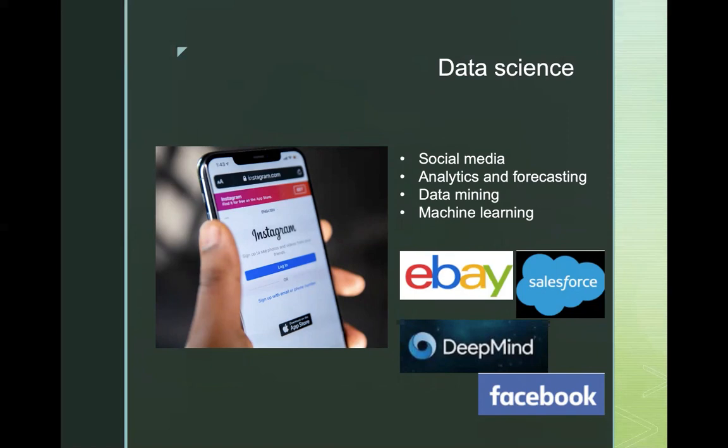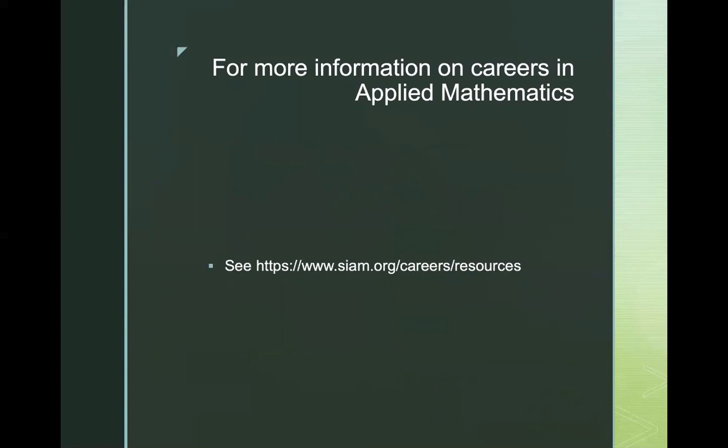With some training in machine learning, applied mathematicians can join the data science community and work for social media companies, analytics and forecasting companies, data mining companies, and machine learning companies such as DeepMind, Salesforce, eBay, Facebook, Instagram, and many others. If you're interested in finding out more about careers in applied mathematics, please visit this website, where you'll find many more examples of possible career paths after an applied math degree.